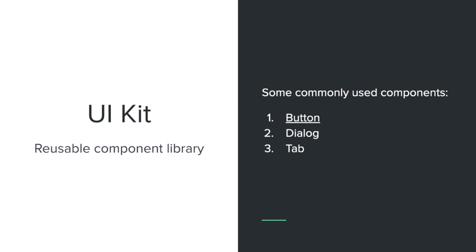We decided to first fix our UIKit library and improve the accessibility of our existing and new components. With a common library, when you fix an issue in one place, it gets fixed on every instance where it is used across products. So that is the first place you should fix your components — that way you get more benefits at once, and then you can start fixing individual products.